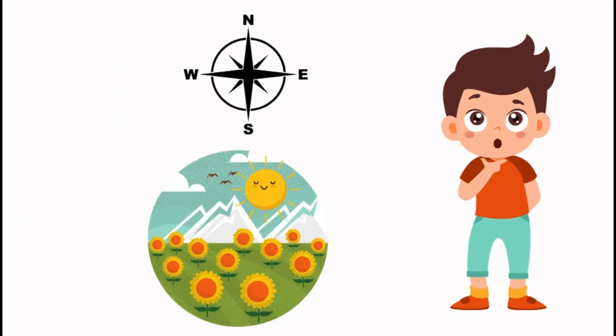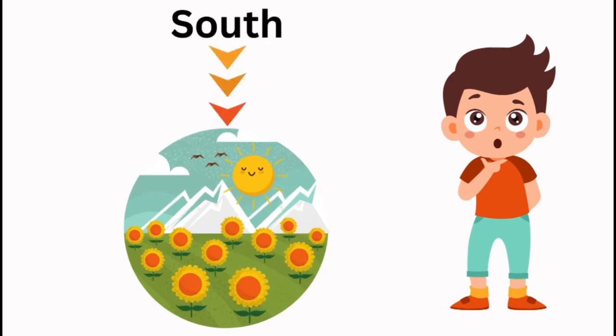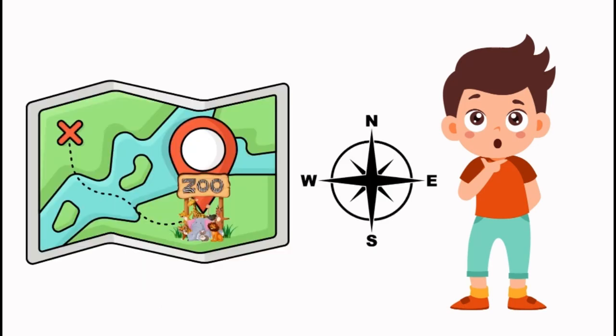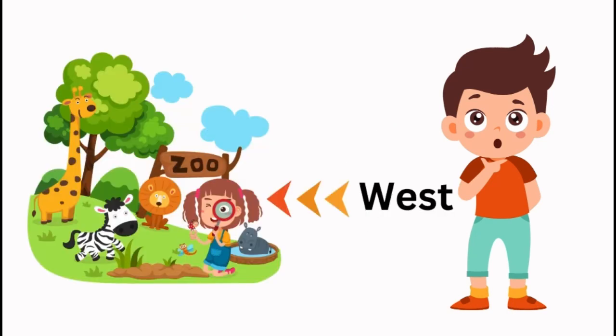A field of sunflowers with the sun shining overhead. Which direction is this? Great job. It's South. A map showing the location of a zoo. Which direction is the zoo from our current location? You got it. It's West.